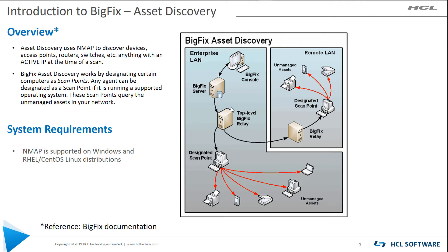The net-net of Asset Discovery is that we're using Nmap underneath the covers. Nmap does a really good job of figuring out and making a pretty good guess of what that OS is and what's on that OS. Keep in mind that Nmap is not a routed protocol, so you're going to need to be able to designate a scan point, as this diagram shows, covering those areas that are on specific LAN subnets.